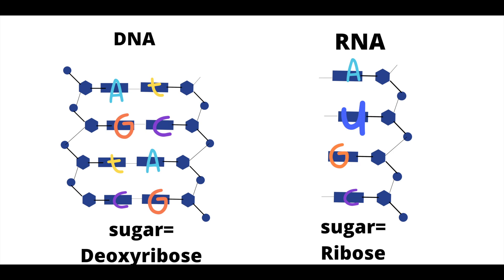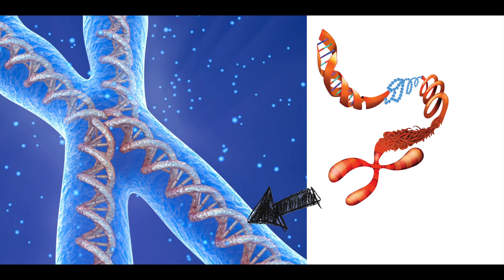Now we know the major differences between DNA and RNA structures and that they're made of nucleotides. Let's focus on their function. First, let's discuss chromosomes. A chromosome is a thread-like structure of nucleic acids and proteins found in the nucleus of most living cells, carrying genetic information in the form of genes.